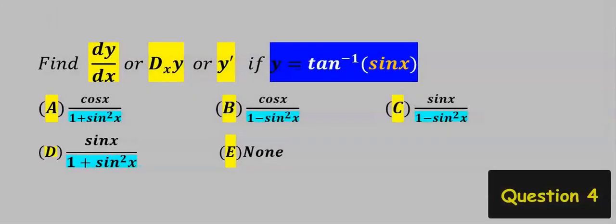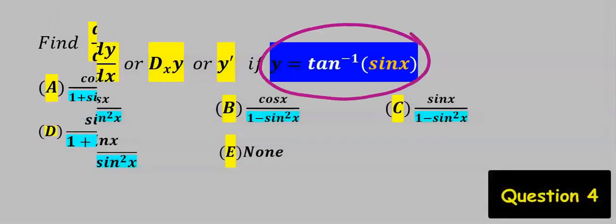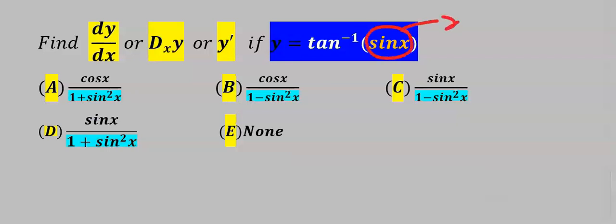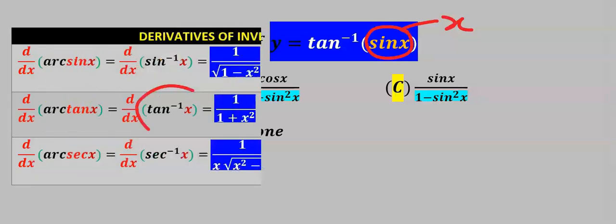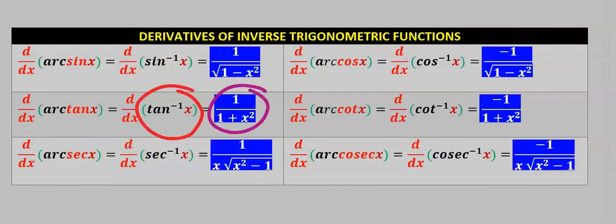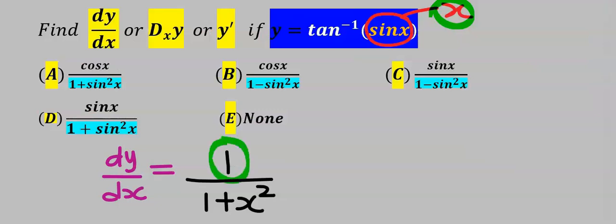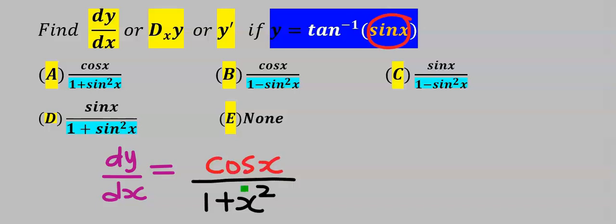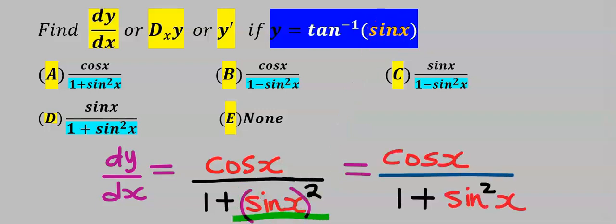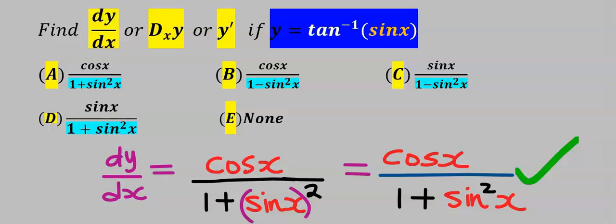Next let's find the derivative of this function. Observe that sine x has taken over the place of x. If you differentiate tan inverse of x you get 1 divided by 1 plus x squared — the differentiation of x gives 1, but we now have sin x. Differentiate sin x and you get cos x. Substituting sin x in place of x, sin x in brackets squared is sin squared x. This becomes our dy/dx. From the options our answer is A.